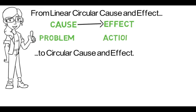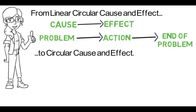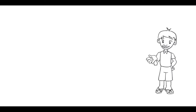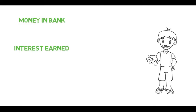A great example of this is: we have a problem, we take action, the problem goes away — end of story. Causal loops show that the story actually continues. A problem affects the amount of action, which comes back around and affects the problem, which continues to affect the amount of action. Here's a more specific example: if the amount of money in a bank account goes up, the amount of interest earned goes up, which causes the amount of money in the account to rise even higher.